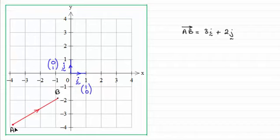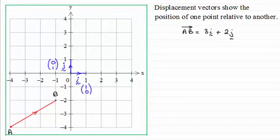For instance, when we're down here, it's still three units across and two units up. So displacement vectors show the position of one point relative to another.